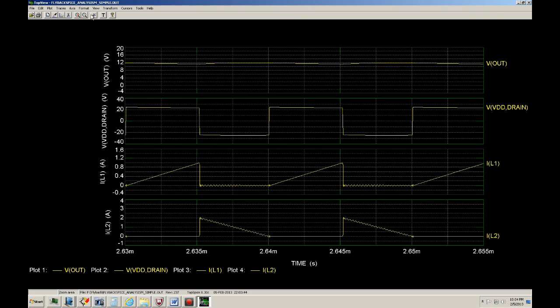So, the first plot, this is the output voltage. I can turn on the cursor, and right here, it says 11.83. You can see a little bit of the ripple.